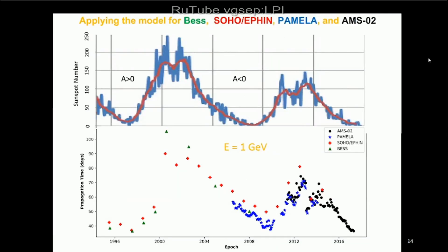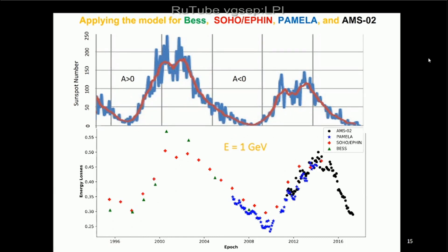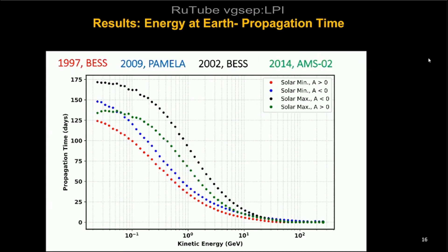Here is the propagation time for protons at 1 GV extended back to the 1990s, along with the sunspot number. Energy losses are shown as well by this extension, and this figure shows propagation time versus kinetic energy in four different regimes.